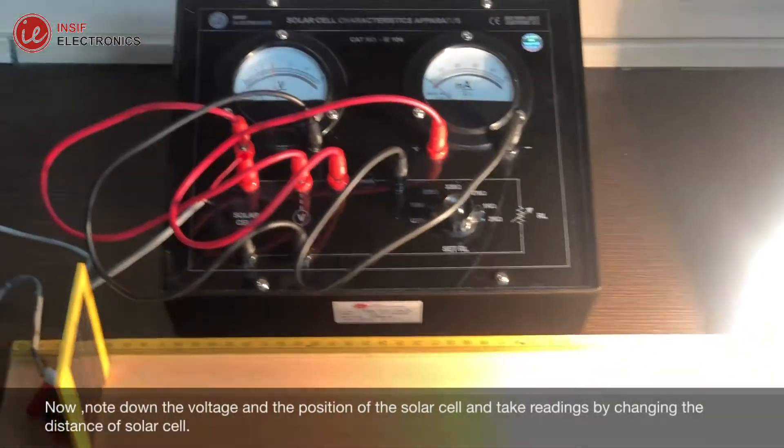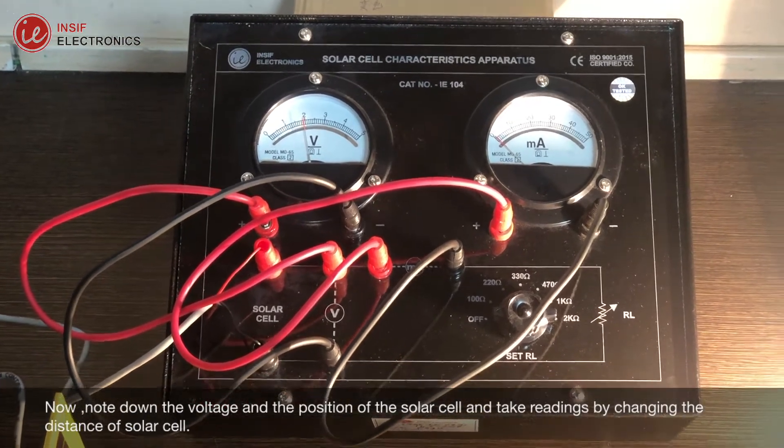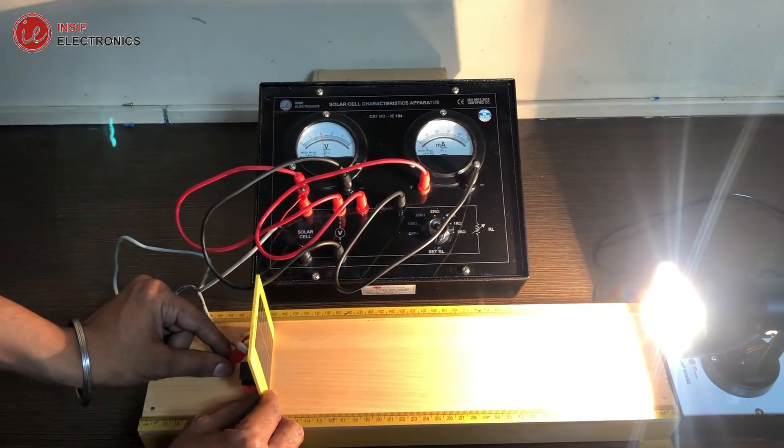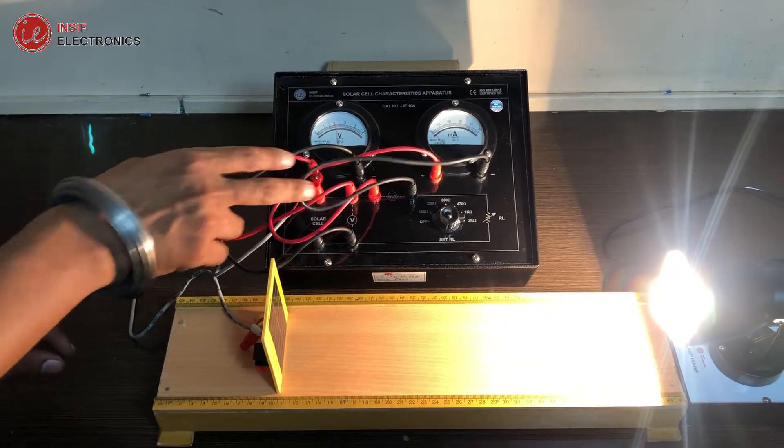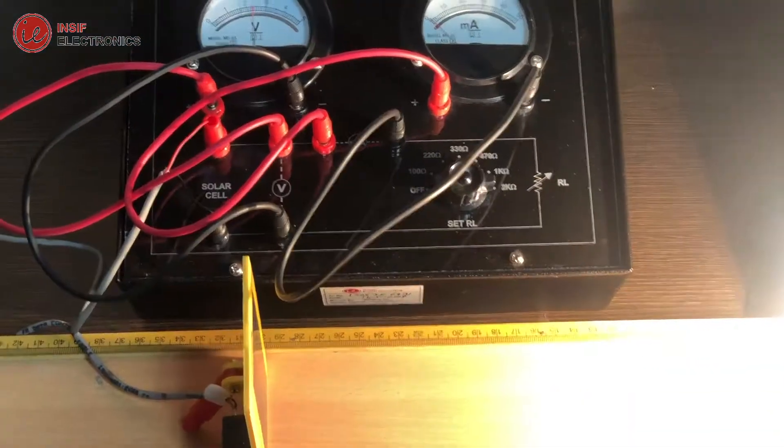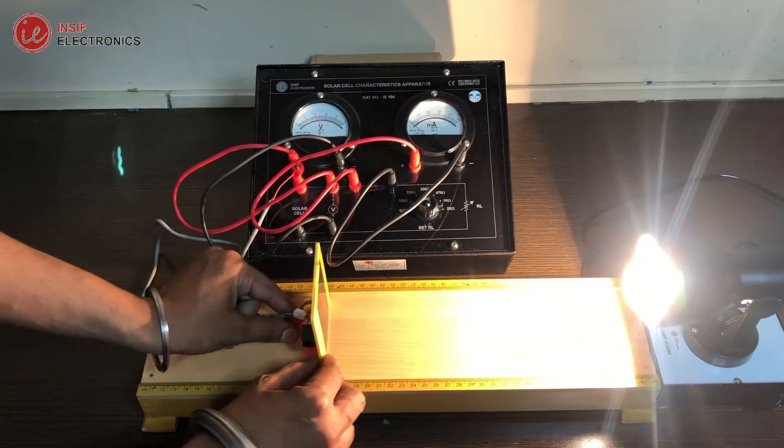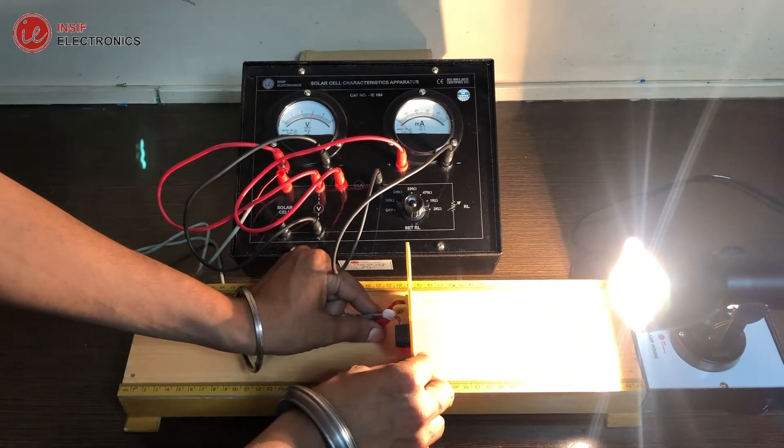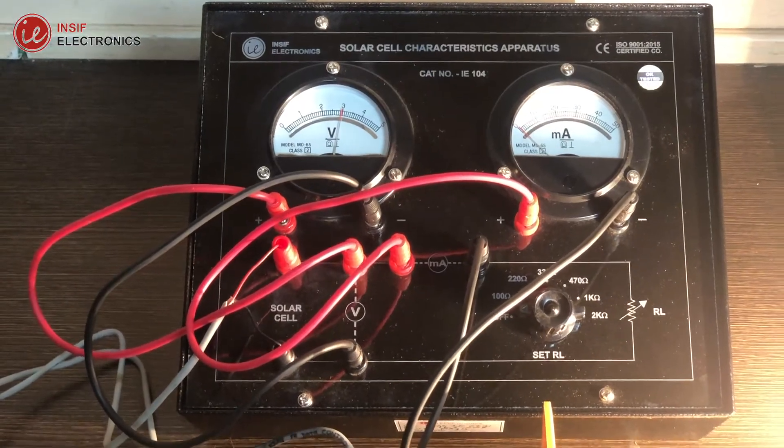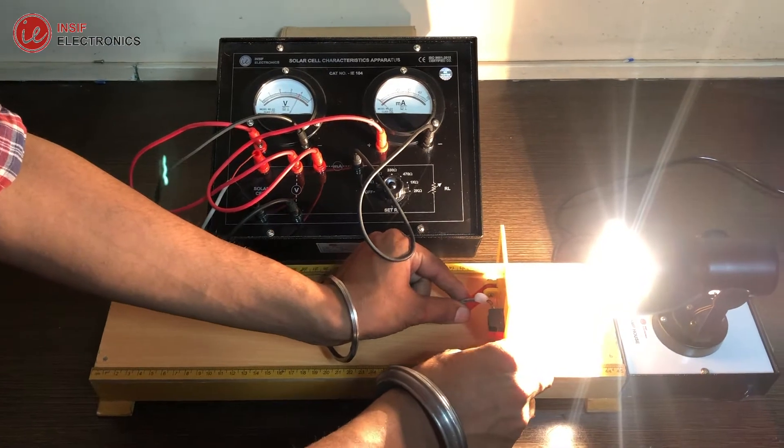Now, note down the voltage and the position of the solar cell, and take readings by changing the distance of solar cell.